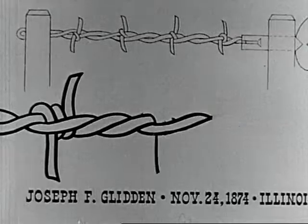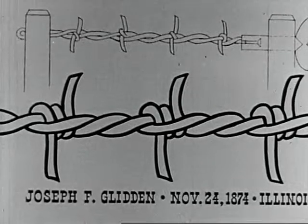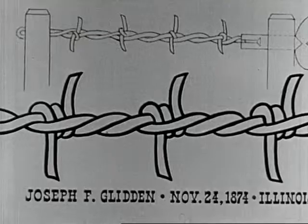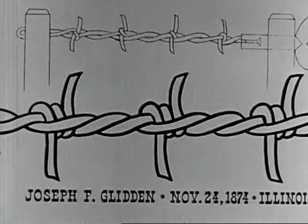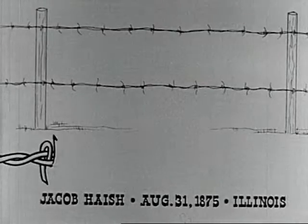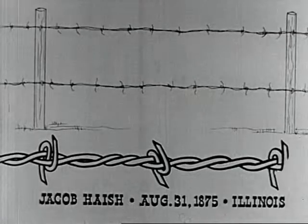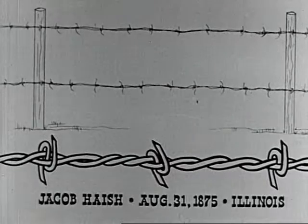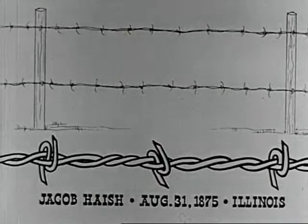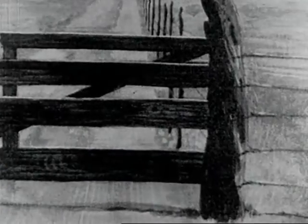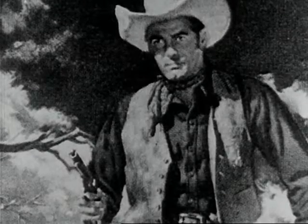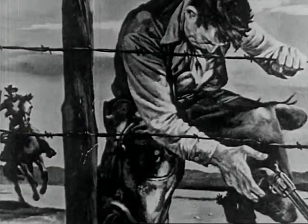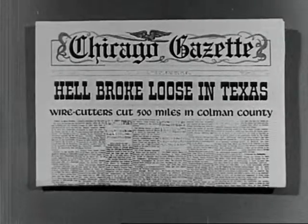In 1874, Joseph Farwell Glidden, a 60-year-old farmer, was granted a patent for a barbed fence wire that worked. The following year, Jacob Haish received a patent for his improved S-barbed steel fence wire. Both methods were practical and inexpensive. The West got its fencing. But the new fences blocked off the cattle trails to the railroads, and there were some who resisted the changes on the plains brought about by barbed wire. Some fenced off water holes, forcing others to become fence cutters.